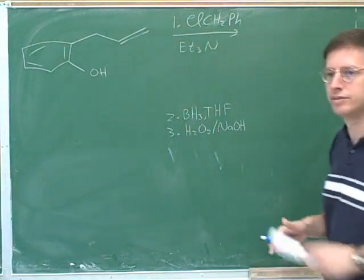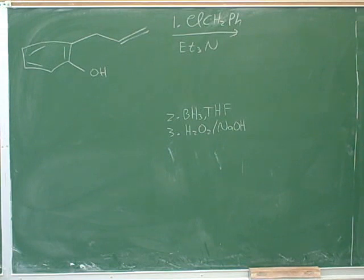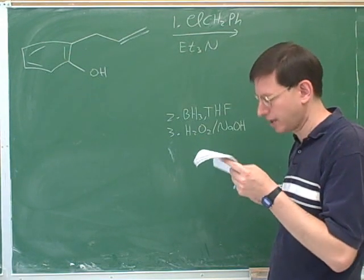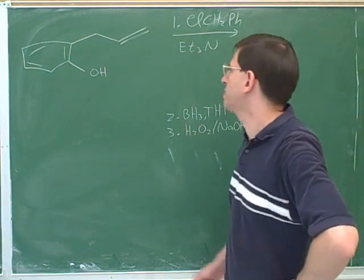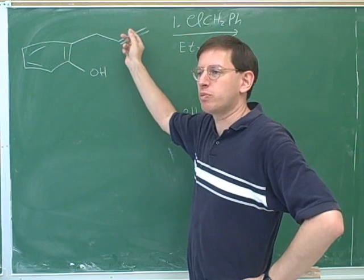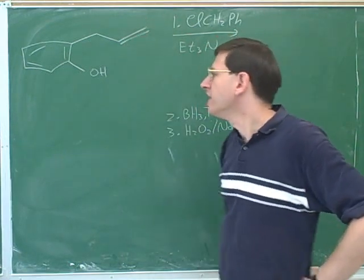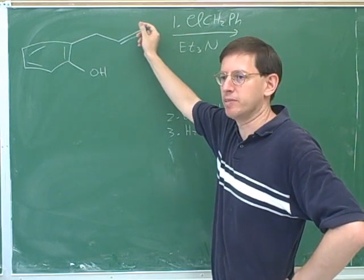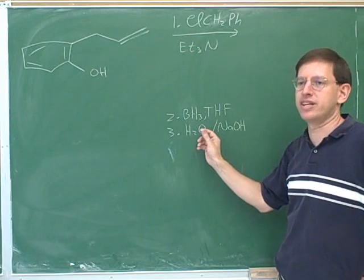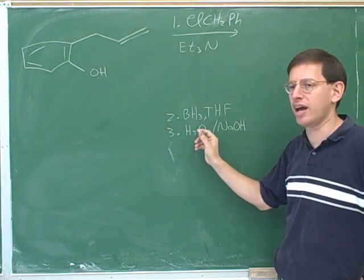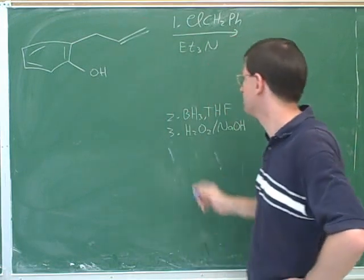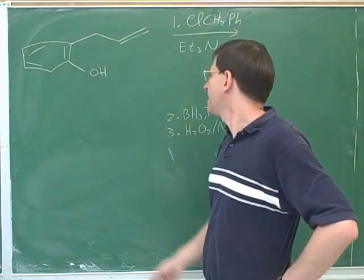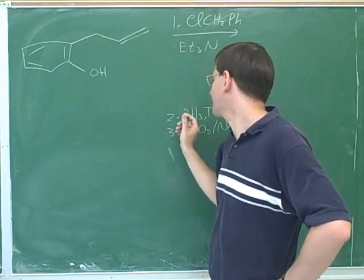Let's think about this starting material. A chemist wants to put an alcohol group on this double bond — specifically at the less substituted carbon. If you think back to the very first term, that would be an anti-Markovnikov addition of OH. We learned how you could do hydroboration-oxidation using BH3 and hydrogen peroxide to put an OH group on the less substituted carbon. However, the chemist has a difficulty because this alcohol group has a tendency to attack BH3.